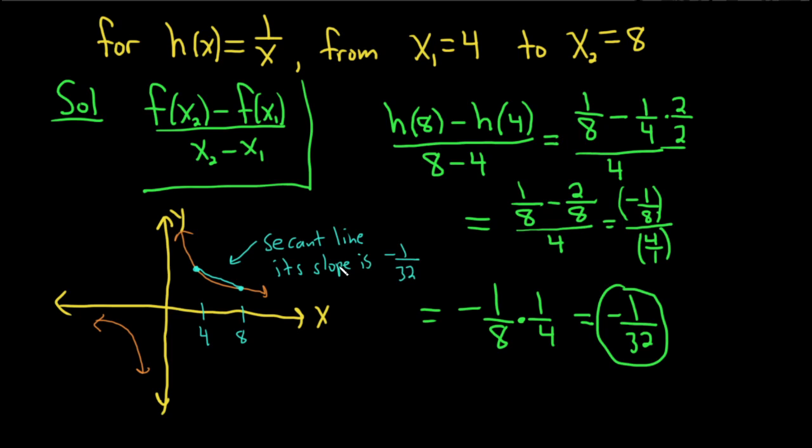And its slope is the average rate of change. It's negative 1 over 32. So the slope of this line is the average rate of change. It's called the secant line. Kind of a cool little thing.